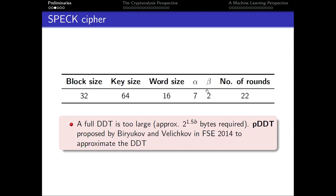Note that for the SPECK cipher, the DDT is usually too large to be constructed. One alternative would be to approximate a DDT experimentally, by keeping only the higher probability differences.